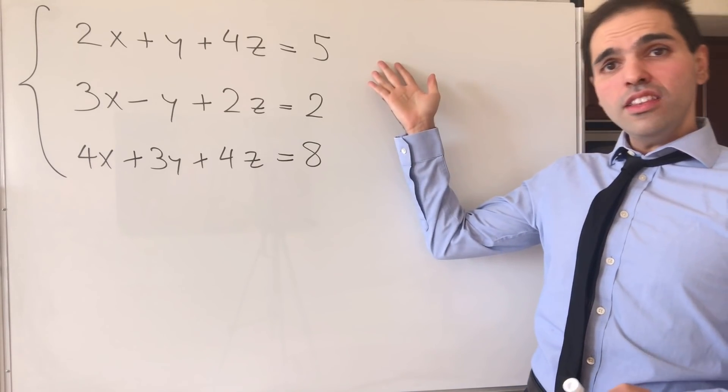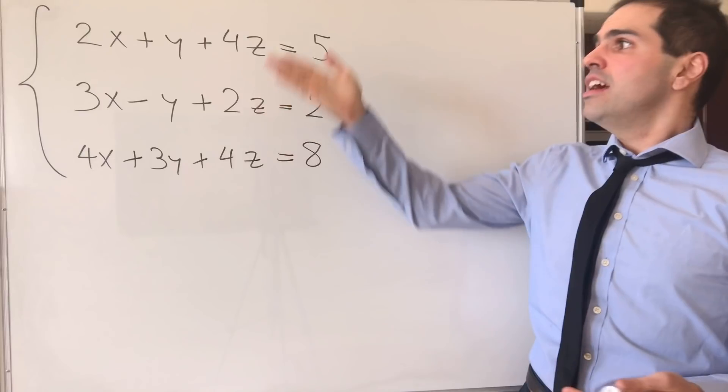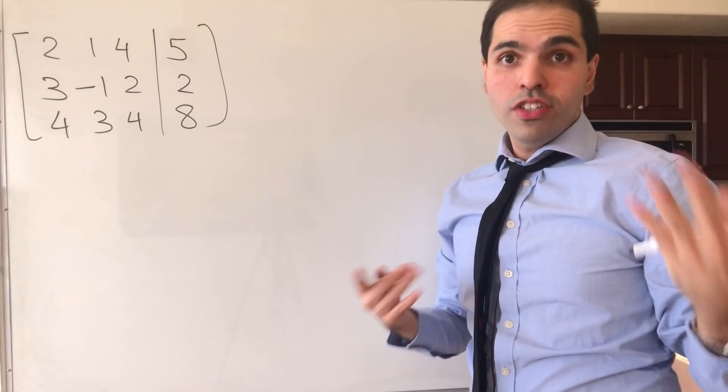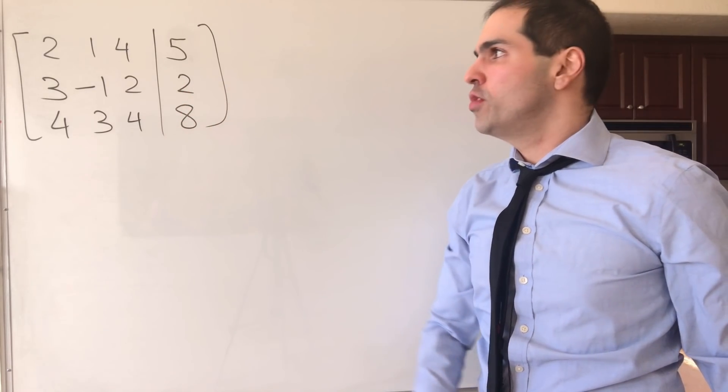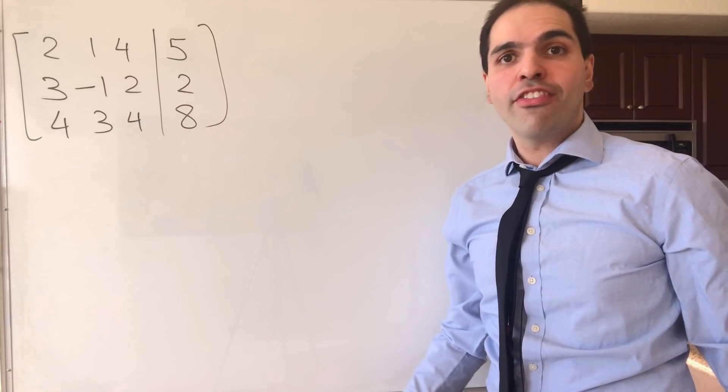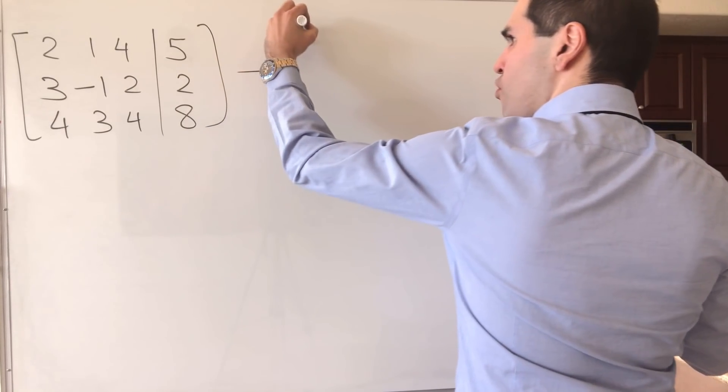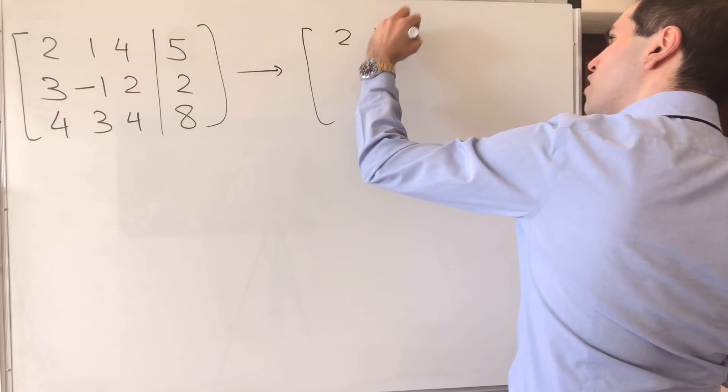So the way it starts is the same thing. Let's try to rewrite this system in terms of a matrix. Just like usual, first you rewrite the system in terms of the matrix by just gathering the coefficients, and then you keep the first row as it is: 2, 1, 4, 5.